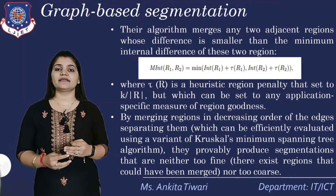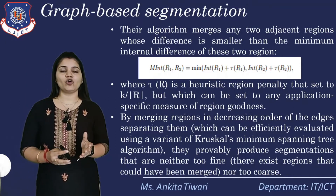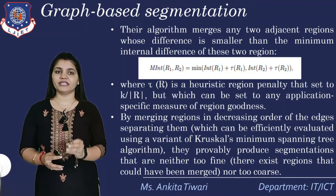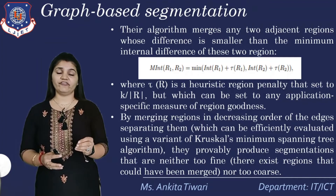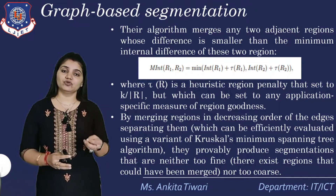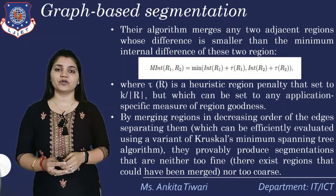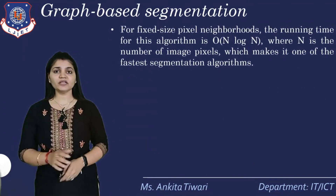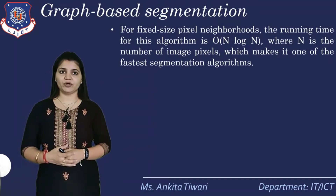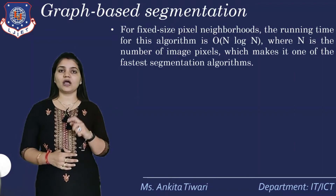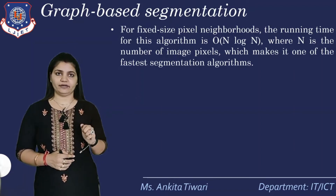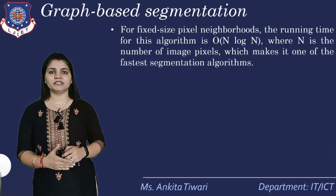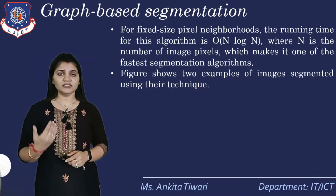They probably produce segmentations that are either too fine or not too coarse — these are the two properties to keep in mind whenever we are finding the minimum spanning tree or finding the separating regions using Kruskal's minimum spanning tree algorithm. For fixed-size pixel neighborhoods, the running time for this algorithm is O(N log N), where N is the number of image pixels, which makes it one of the fastest segmentation algorithms.